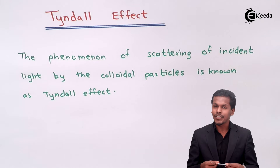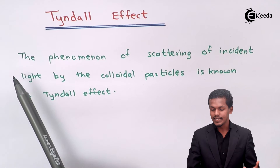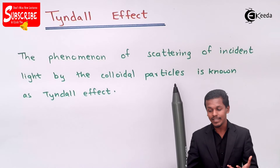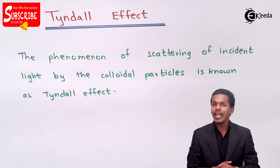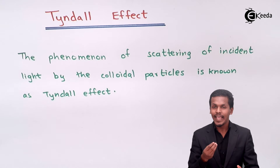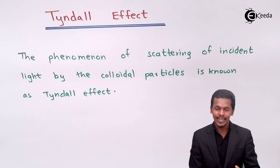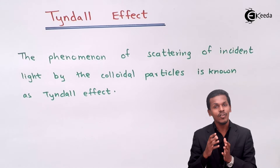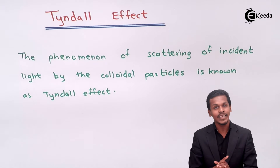Let us understand the definition of the Tyndall effect. The phenomenon of scattering of the incident light by the colloidal particles is known as the Tyndall effect. Colloidal particles have a particular size ranging from 1 nanometer to 10³ nanometers, and this size plays a very vital role in actually scattering the incident light.